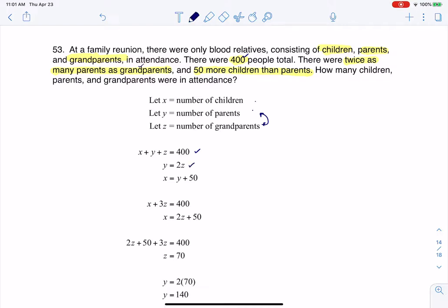And then the last one says there's 50 more children than parents. That means however many parents I have, if I add 50 to it, I'm going to have the number of kids. So that's where you see this third equation, x equaling y plus 50.